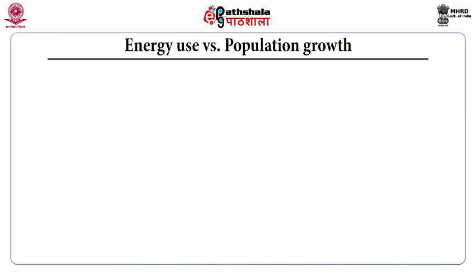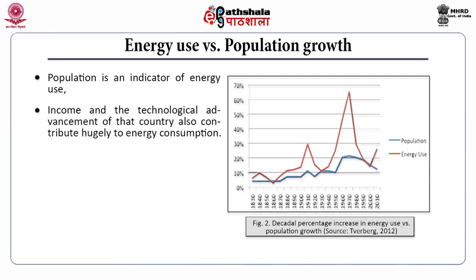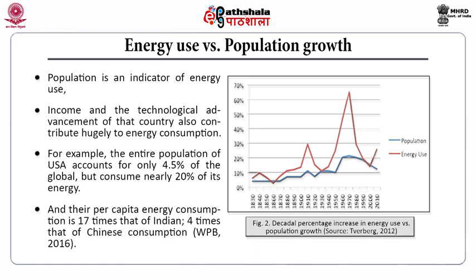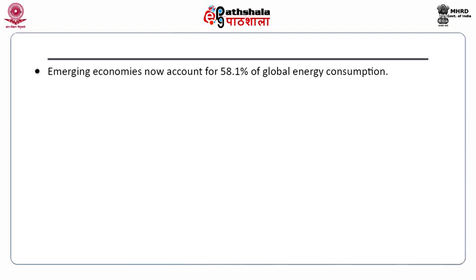Population is an indicator of energy use. Income and technological advancement of a country also contribute hugely to energy consumption. For example, the entire population of the USA accounts for only 4.5% of the global population but consumes nearly 20% of its energy. Their per capita energy consumption is 17 times that of the Indian population and four times that of Chinese consumption. The emerging economies account for 58.1% of global energy consumption.